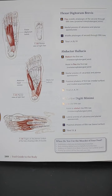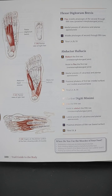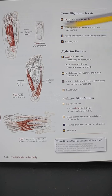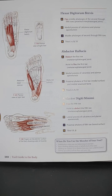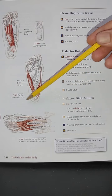Looking at image 7.104, a plantar view of the right foot, you can see the flexor digitorum brevis highlighted. The action is to flex the middle phalanges of the second through fifth toes. Origin is the medial process of the calcaneus and plantar aponeurosis, and insertion is the middle phalanges of the second through fifth toes. Nerve innervation is the tibial nerve, L4, L5, and S1.